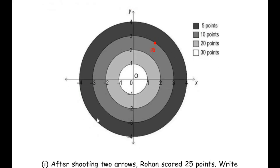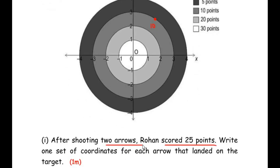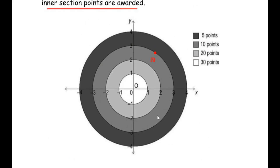Rohan has shot two arrows and the total score he got was 25 points. We have to find the coordinates of the two arrows he shot on this circular board. To find the coordinates, they have given us the x and y axis. Since his score is 25, we can divide 25 into two parts: when his first arrow was shot he scored 20 points, and when he shot the second arrow he scored 5 points — 20 plus 5 gives us 25.